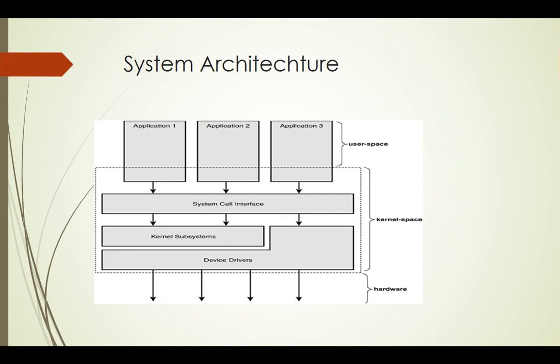This is the typical system architecture where you can see the device drivers, the system call interface, and the applications. In the kernel space we have the device drivers, kernel subsystems, and the system call interface, and some part of user space. The third part is hardware, which directly talks to the device drivers — the hardware talks to the kernel space.